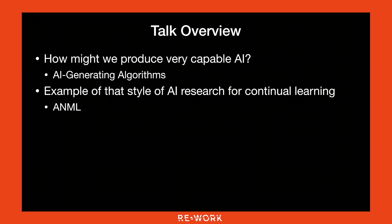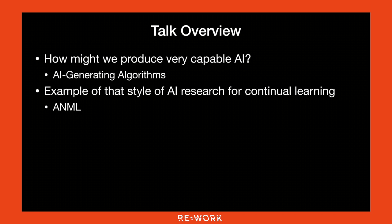The idea I want to talk about first is at a very high level — perhaps the most high-level question we could discuss — which is how are we going to produce the most powerful AI imaginable, including human-level AI. That will take us to a new idea I have called AI-generating algorithms. I'll also show you an instance of that strategy: a new algorithm called ANIMAL that can help solve continual learning, or mitigating catastrophic forgetting.